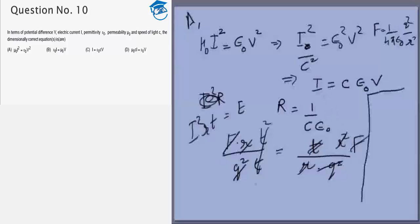In option C we are given I is equal to ε₀ C V, right. So that means I can be written as q by t is equal to ε₀, ε₀ can be written as q² by r² f.